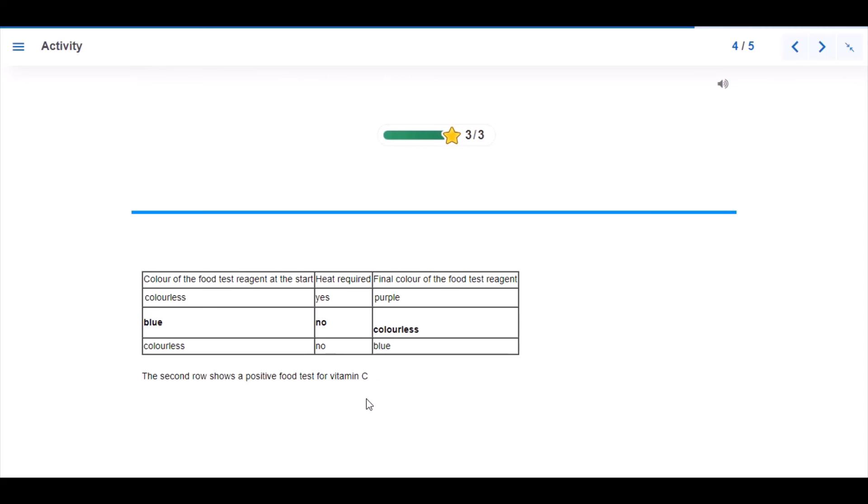So here we have a table showing us the color of the food test reagents at the start, heat required, and then final color of the food test reagents. On the second row we have that the presence of vitamin C is positive in that at the beginning, the color of the food test reagent is blue and there is no heat required. By the addition of DCPIP, the reagent turns colorless and it indicates that vitamin C is present.